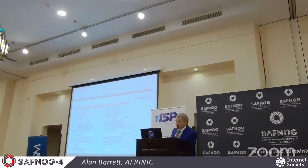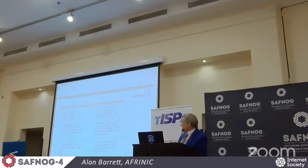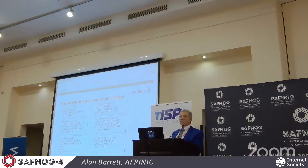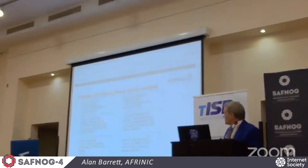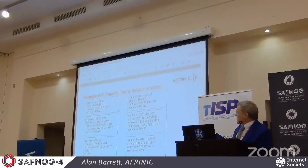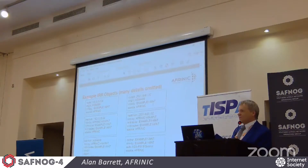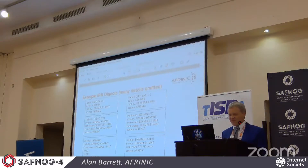Autonomous system objects specify the AS number, and the import and export attributes are optional things where you can describe your policy for how you filter routes and your peering and transit arrangements. inetnum objects say which organisation is responsible for the address space. The route object says which ASN announces the route and the address space, and the autonomous system object says information about the peering and the filtering that that autonomous system will do.